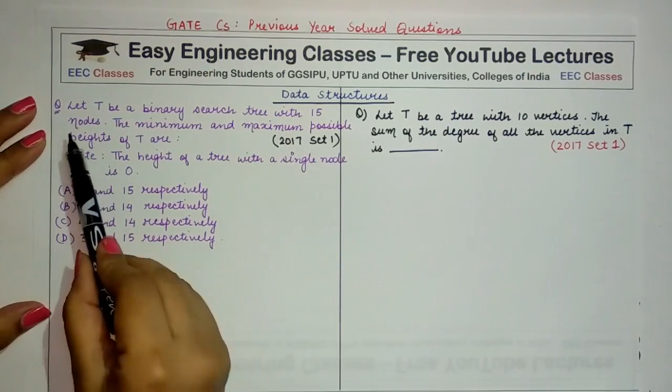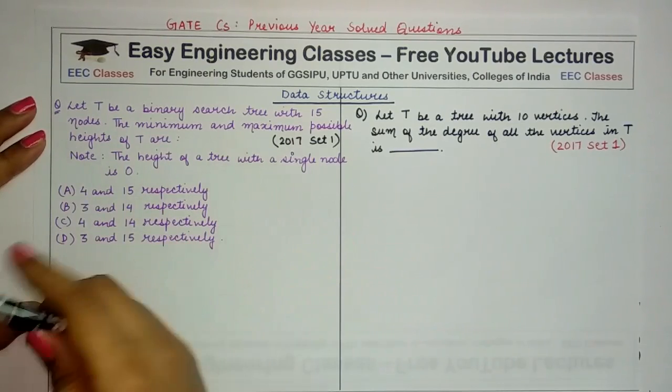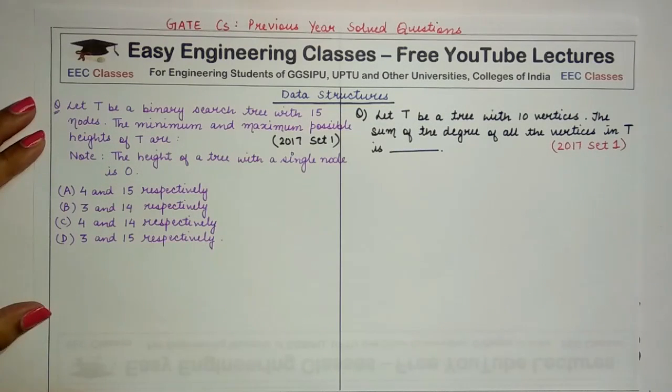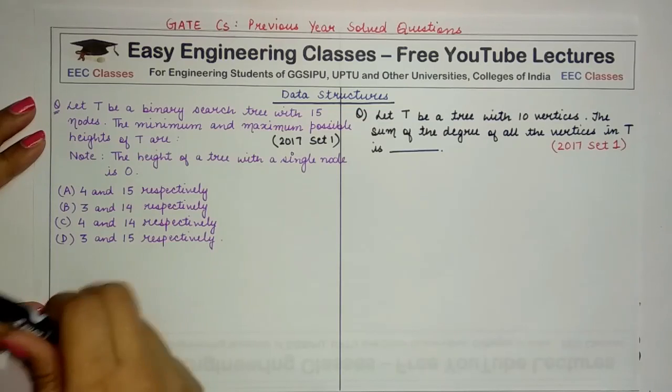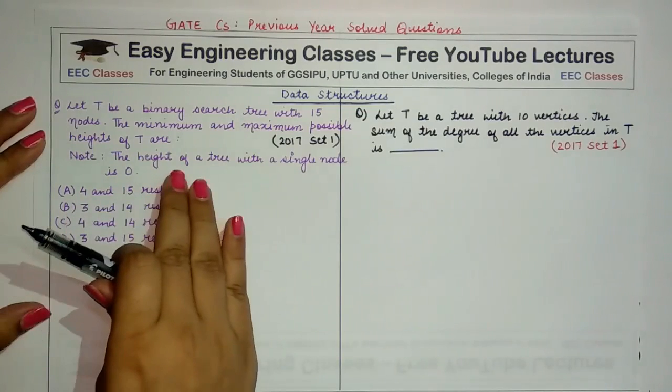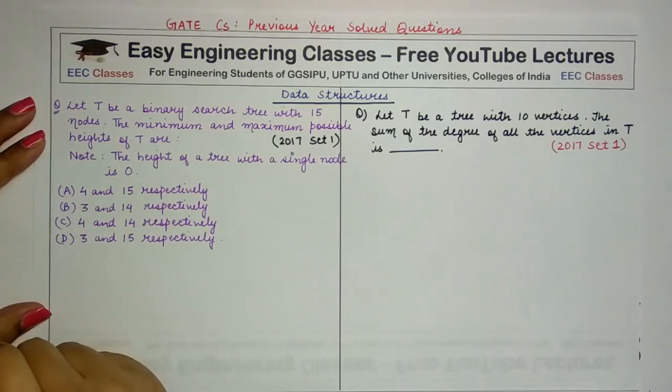The first question is: let T be a binary search tree with 15 nodes. The minimum and maximum possible heights of the tree are, and you are given that the height of a tree with a single node is zero.